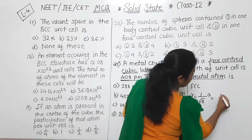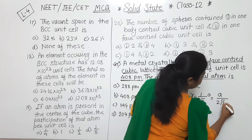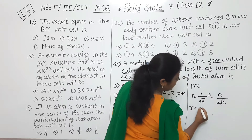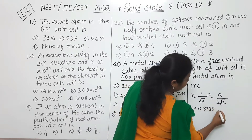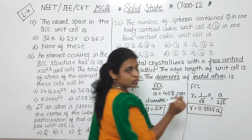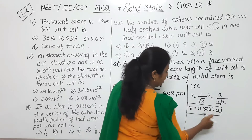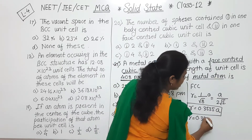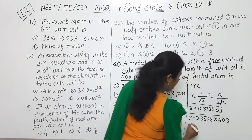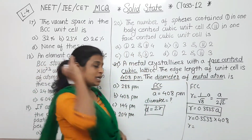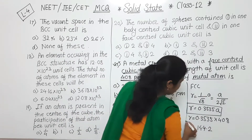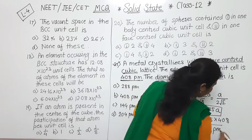This formula can also be written as A divided by 2 root 2. For simplification purposes, we take R equal to 0.3535 A. So we put the value of A: R is equal to 0.3535 into 408. After this calculation, we get the answer — that is 144.2.